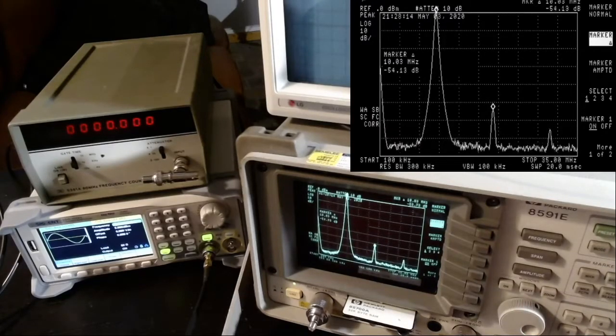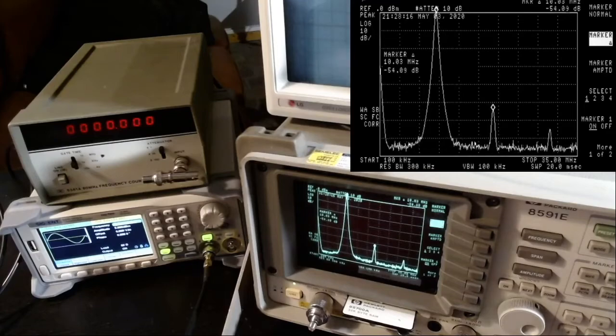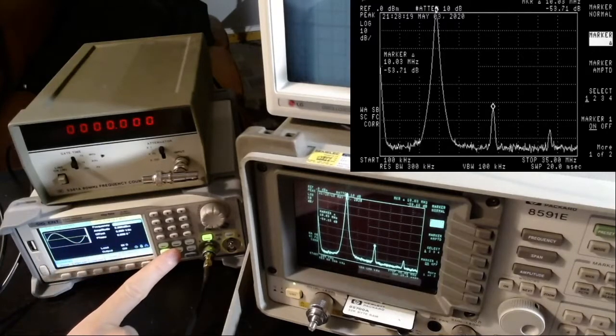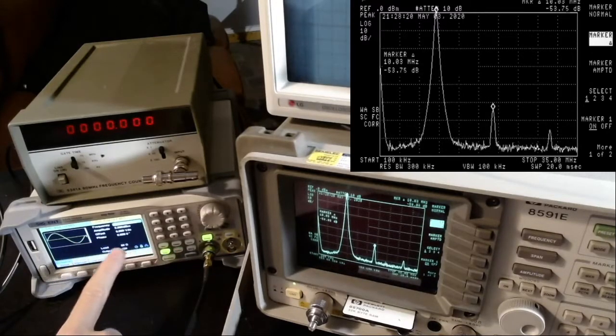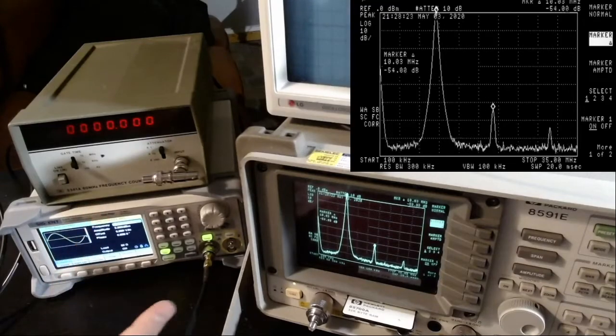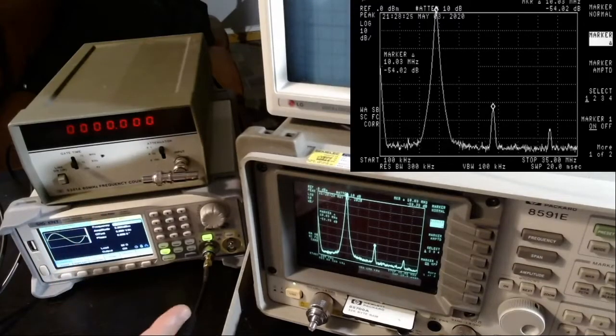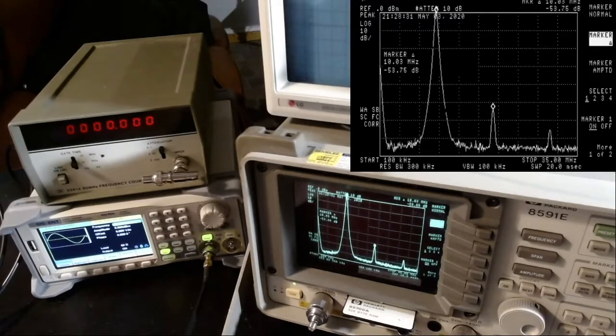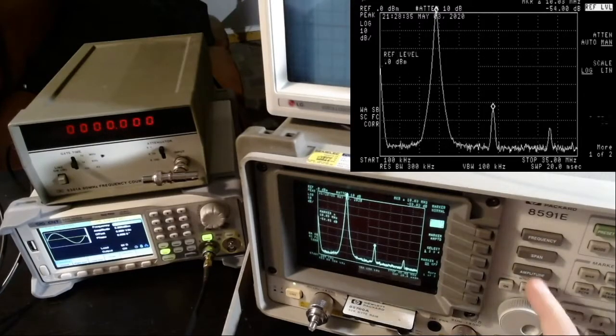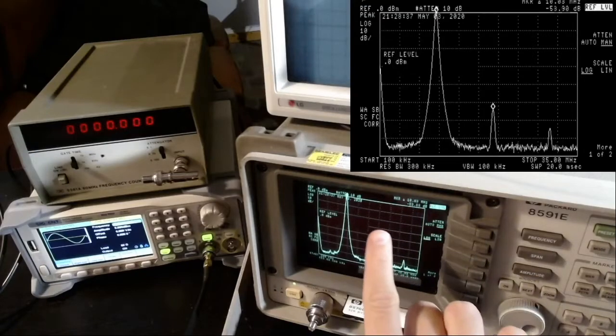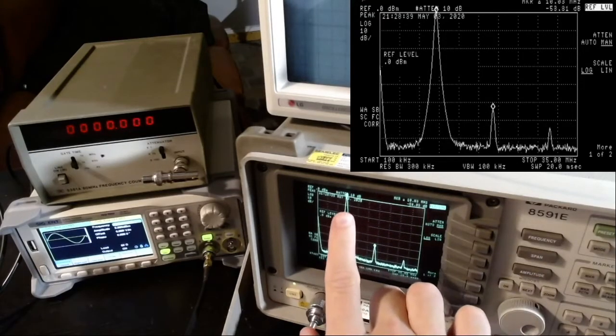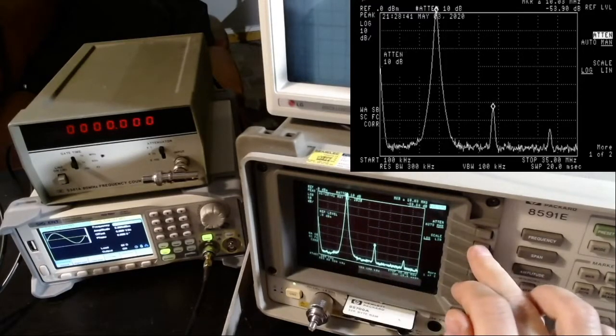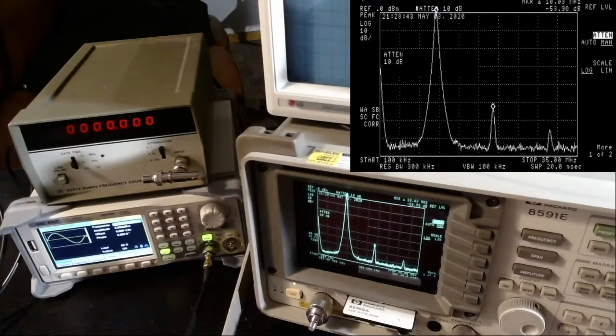The problem is that the signal coming out from this unit is too strong. When it enters the spectrum analyzer, the spectrum analyzer is basically a mixer and can create its own distortions in the harmonics. The solution is to play around with the attenuation. At the moment we have 10 dB of attenuation.